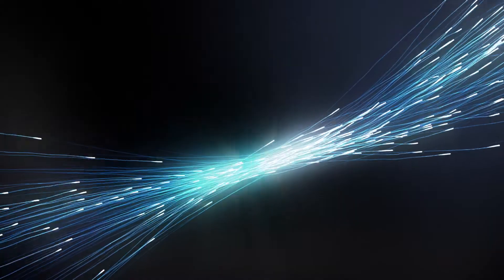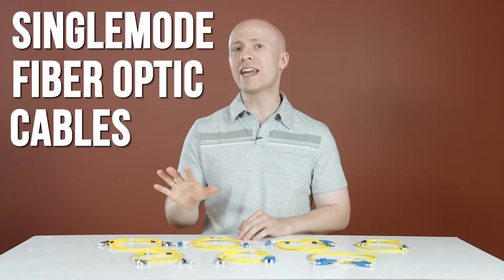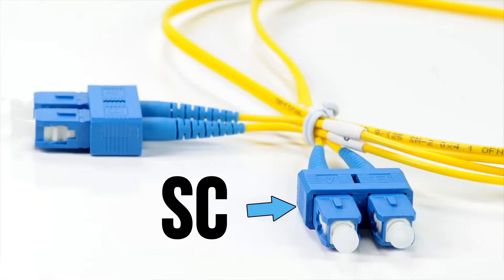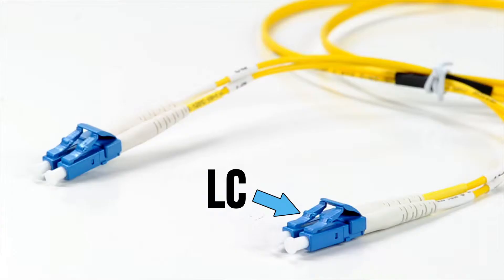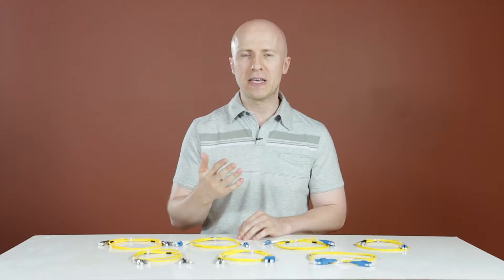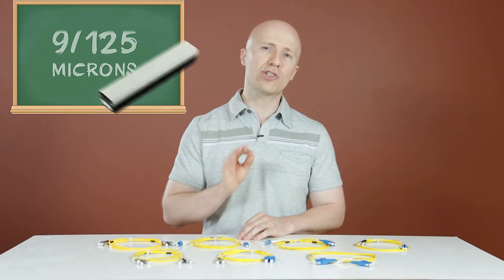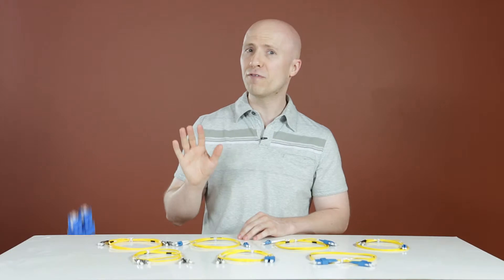Single-mode fiber cables come in a variety of connector types: SC, FC, ST, LC, and MTRJ. Single-mode fiber cables have a diameter of 9/125 microns and can transmit data up to 50 times farther than multi-mode fiber cables.